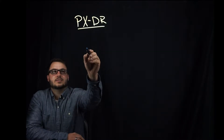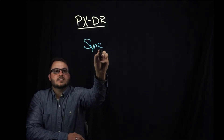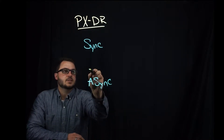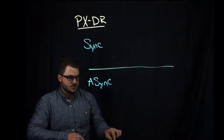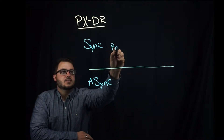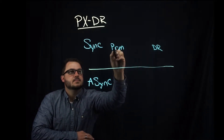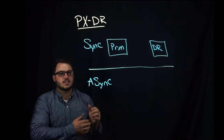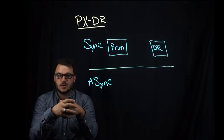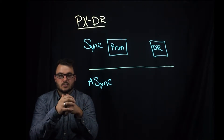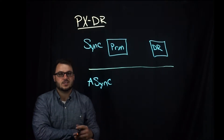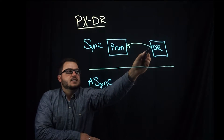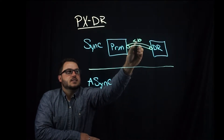Portworx offers two main levels of DR: Synchronous and Asynchronous. In the Synchronous use case, you have a primary and a DR site. This is when applications need really low RPO and also low RTO — when your application downtime has to be absolutely minimal, and therefore we need a pretty fast network connection between these clusters, typically less than 10 milliseconds.